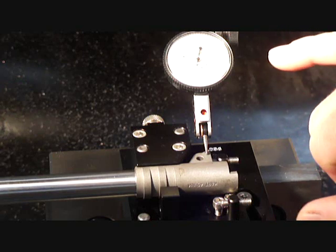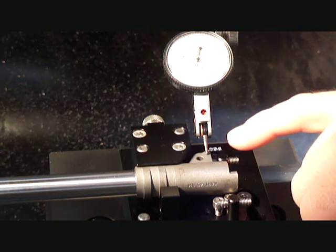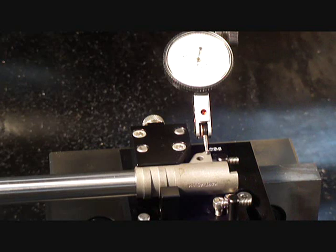Here we're on the mill using a one ten thousandth dial indicator. We're checking the level of the barrel feet before we start our milling procedure on the barrel itself.